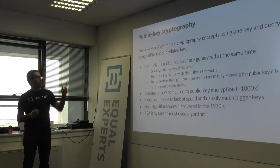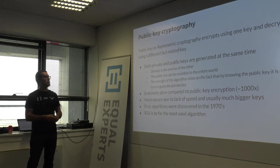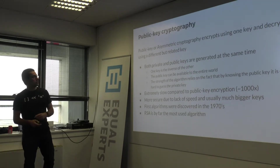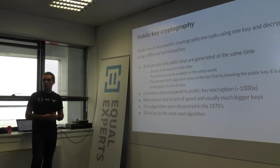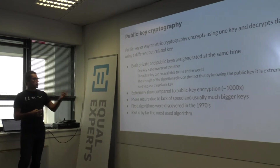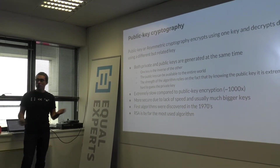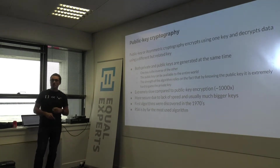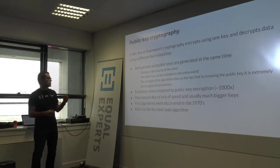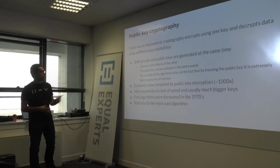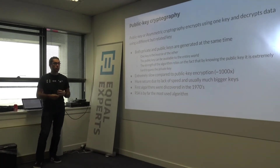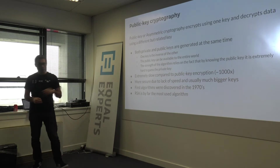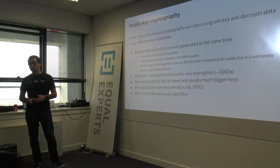Public key cryptography, or asymmetric cryptography, encrypts using one key and decrypts using the opposing key. The keys are related — both private and public keys are generated at the same time, like RSA on our laptops. One key is the inverse of the other. The public key can be available to the entire world — we just broadcast it. The strength of the algorithm relies on the fact that knowing the public key, it's extremely hard to guess the private key. It's extremely slow compared to symmetric cryptography, more secure due to larger key sizes — commonly 2048 bits. The first algorithms were discovered in the 1970s and RSA is by far the most used.